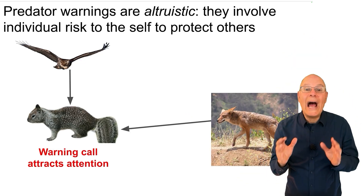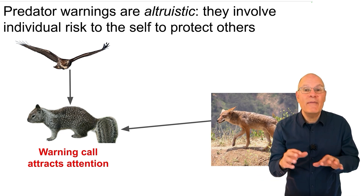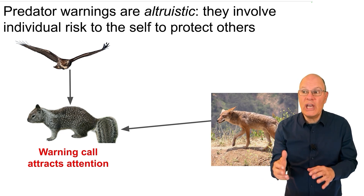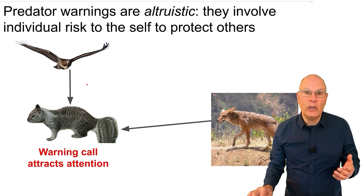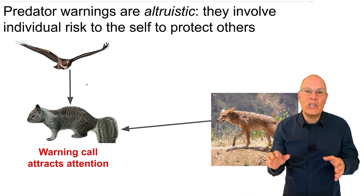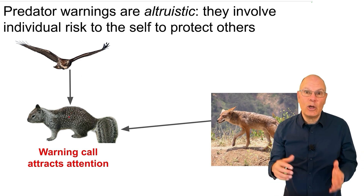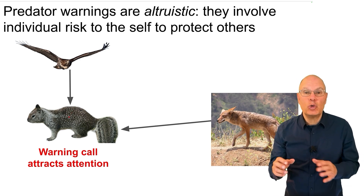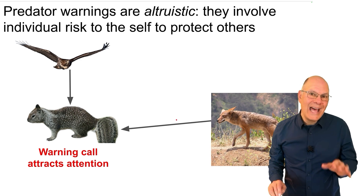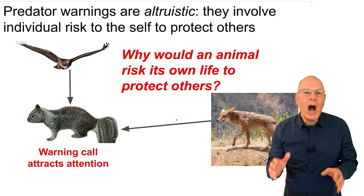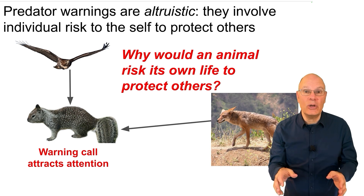Predator warnings are altruistic — they're self-sacrificing. They involve individual risk to the self to protect others. When a squirrel emits a call about an aerial predator, it increases the chance that that predator will attack the animal that calls out. That's of course true for a terrestrial predator as well. And that leads us to the question: why would an animal risk its own life to protect others?